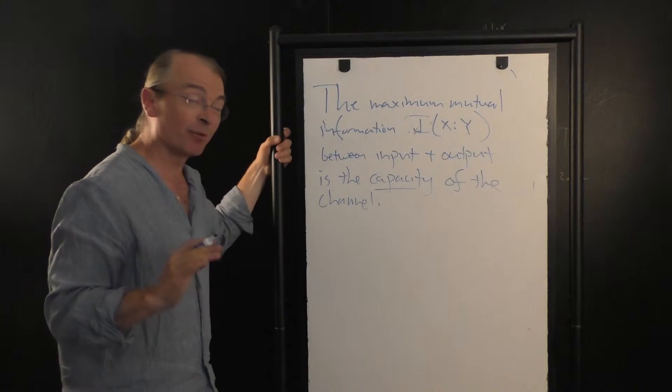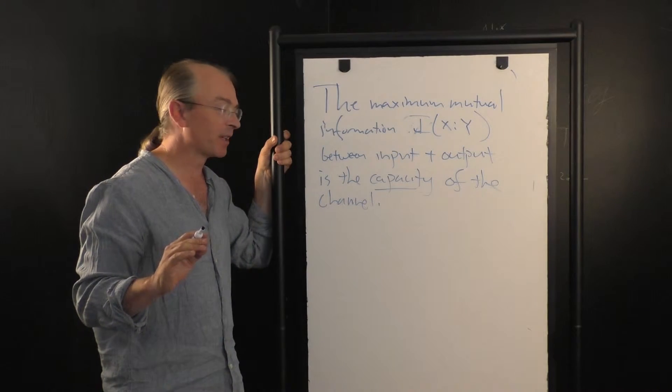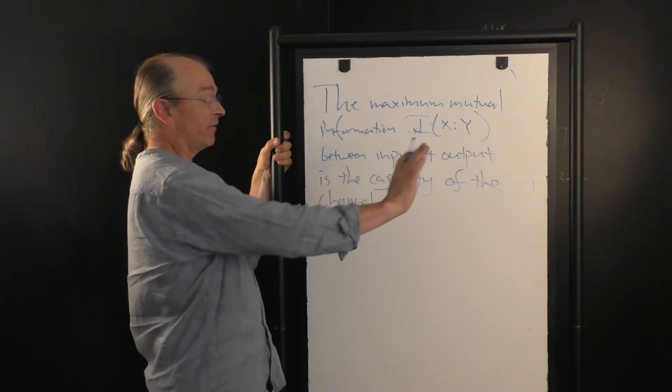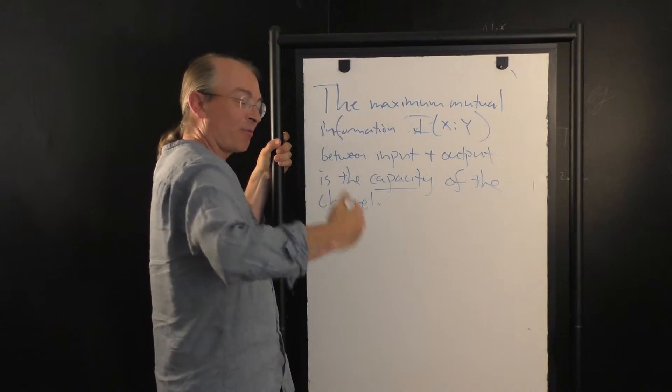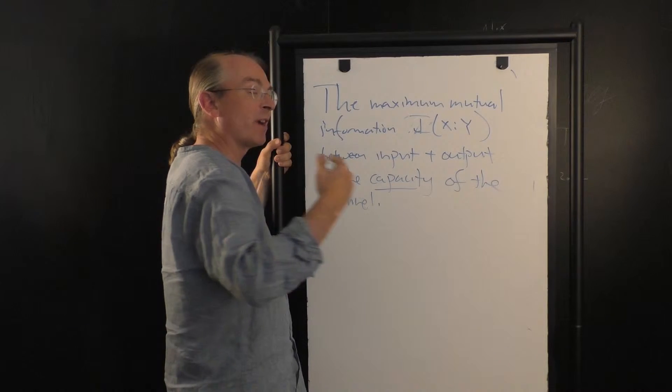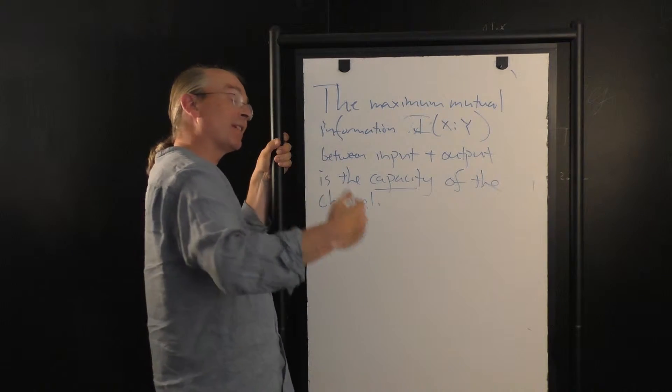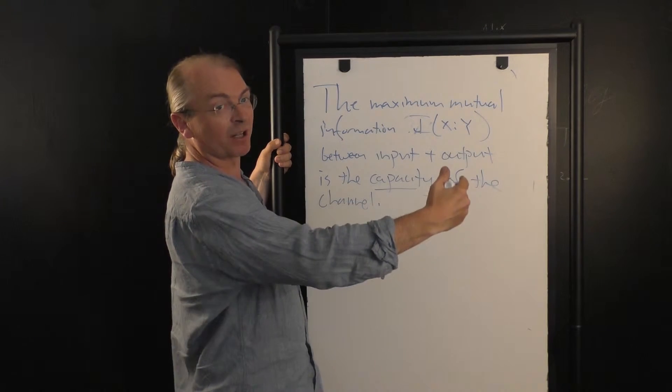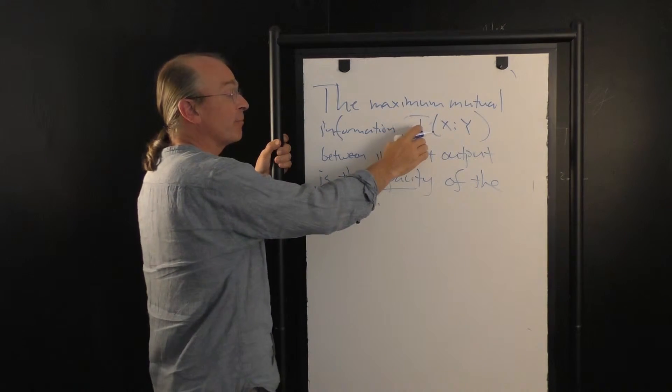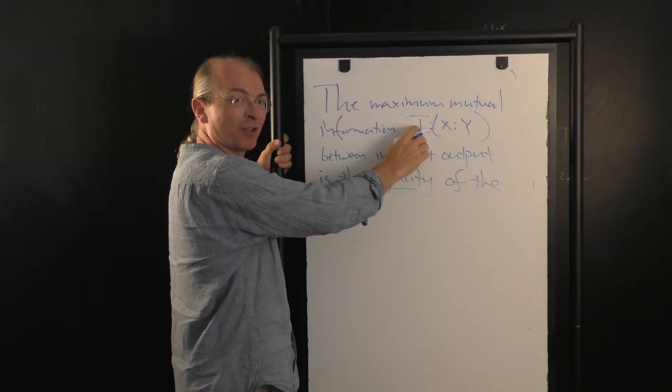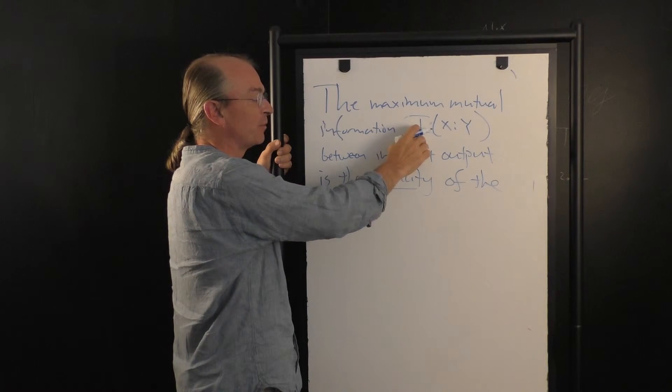Now, actually, what I just showed or just stated was that we can achieve this capacity in the sense that the rate per bit sent down the channel, the rate at which information can be reliably sent down the channel, and decoded at the following at the far side, can approach this mutual information, can get arbitrarily close to this mutual information.